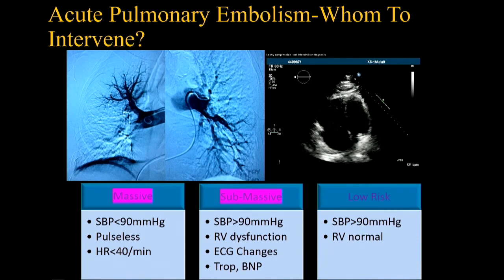The first question is: who needs intervention? On the low-risk end are patients whose blood pressure is normal and whose RV is normal. Their troponin may or may not be positive, and they require only anticoagulation — some can be discharged from the ER directly. The next categories are massive and submassive PE patients with low blood pressure, whether stabilized or not. The inclusion of syncope in the massive PE definition has broadened the scope of whether we can intervene without the risk of systemic thrombolysis.